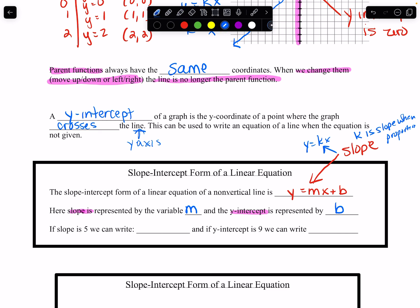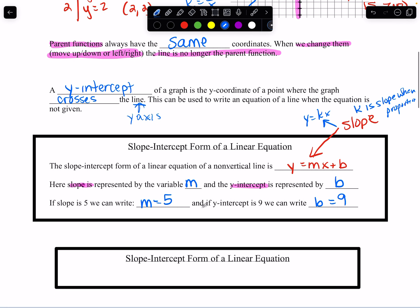If the slope is 5, then we can write m equals 5. And if the y-intercept is 9, we can write b equals 9. So our main goal with all of this is to learn the slope-intercept form of a linear equation is y equals mx plus b. Now I can always hear, why do we need this? When are we going to use this? That depends on what you end up doing as an adult, but I can tell you, you will use it while you're working through your high school math classes. So with that said, we just learn it and we move on.